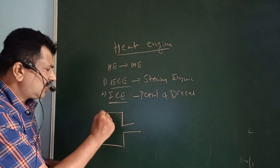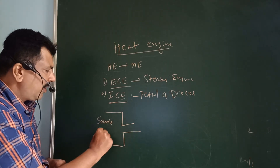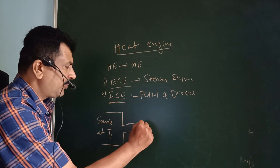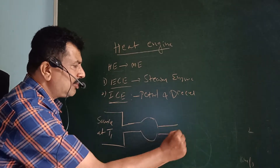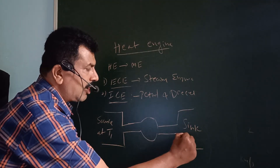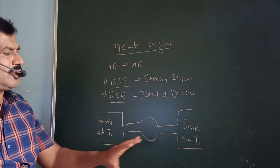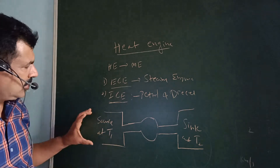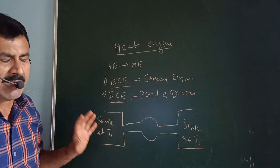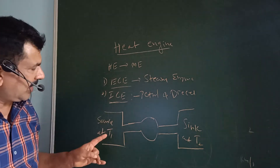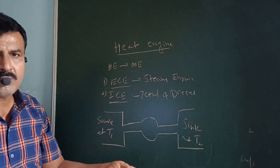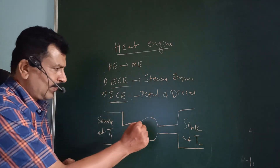In a heat engine, there are three components. The source is the hot body — a hot reservoir which maintains constant high temperature T1. The cylinder or engine is in the middle. The sink is the cold body which maintains constant low temperature T2, and it has infinite thermal capacity.